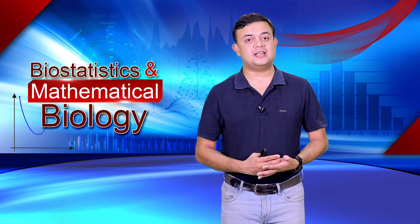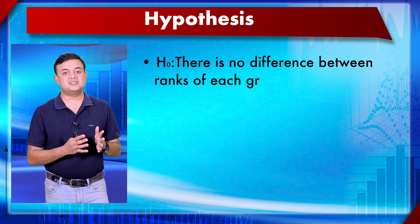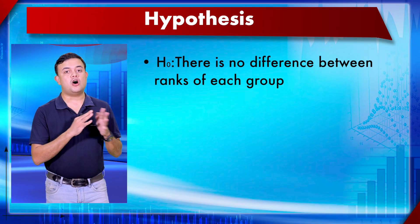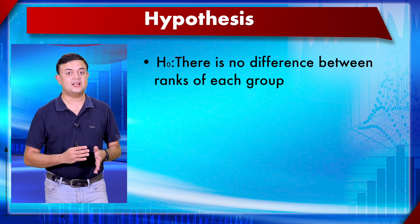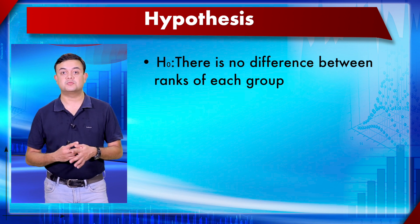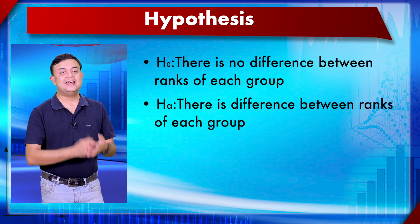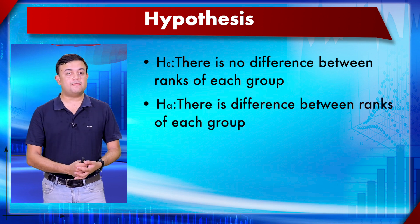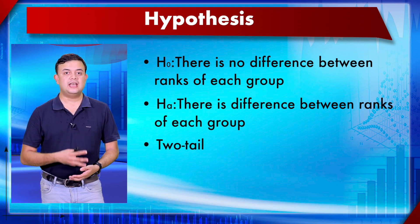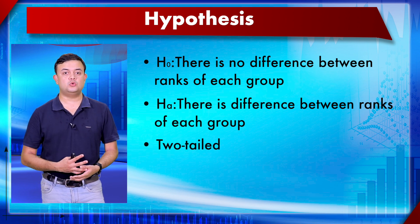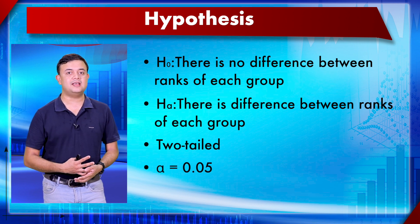The hypotheses for the Mann-Whitney U test: the null hypothesis states there is no difference between the ranks of each group, while the alternative hypothesis states there is a difference between the ranks of each group. It is a two-tailed test with significance level alpha equal to 0.05.